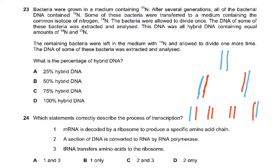Question number 23. Bacteria were grown in a medium containing N15. After several generations, all of the bacterial DNA contained N15. Some of these bacteria were transferred to a medium containing a common isotope of nitrogen, N14. The bacteria were allowed to divide once. The DNA of some of these bacteria were extracted and analyzed. This DNA was all hybrid DNA containing equal amounts of N15 and N14.